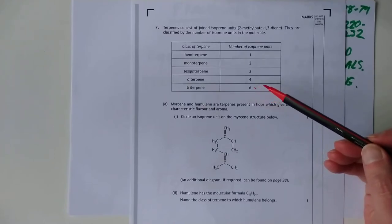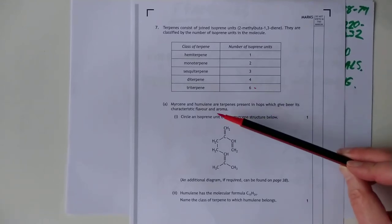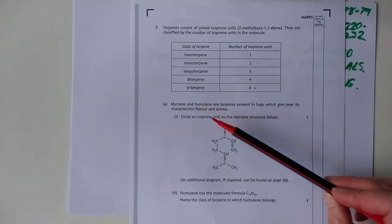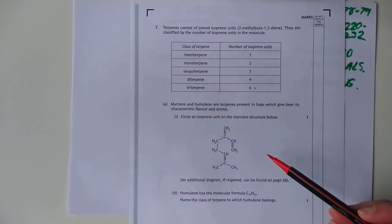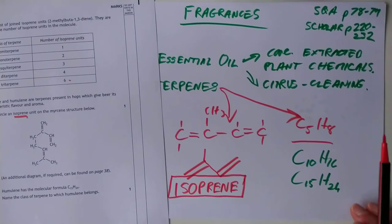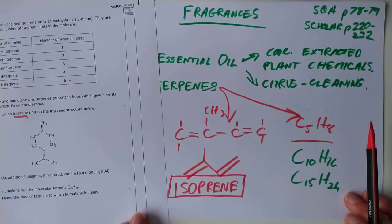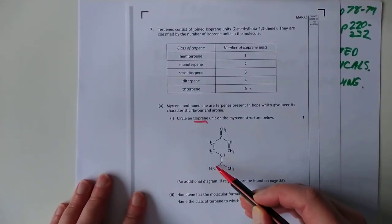When you join isoprenes together, you make terpenes. And my apologies for not making that clear. Glad I kept this example in. So here we go. A triterpene is six isoprene units. And then they give you this. Myrcene and humulene are terpenes present in hops, which give beer its characteristic flavor and aroma. Circle an isoprene unit on the structure of myrcene. Too many -enes here below. So they give you this big complex molecule. And they're wanting you to identify an isoprene unit.